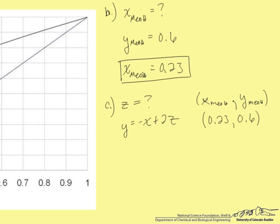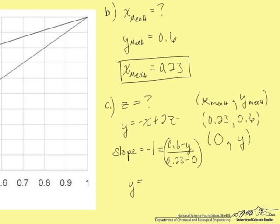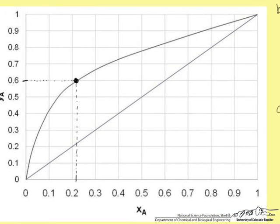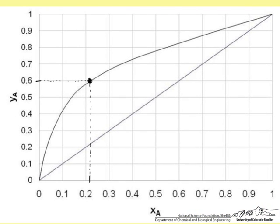To solve for a second point so we can make our line, we know from our equation that the slope is equal to negative 1. And if we choose our second point to be at some point when X is 0, we can solve for Y. So slope is equal to 0.6 minus Y over 0.23 minus 0. Solving for Y, we find that our new Y is 0.83. So our second point will be 0, 0.83.